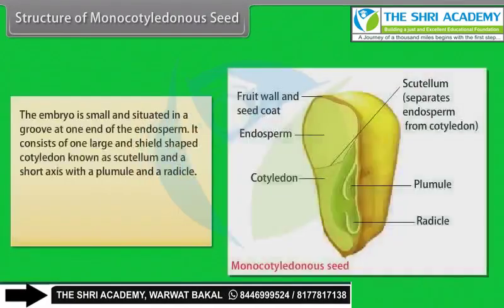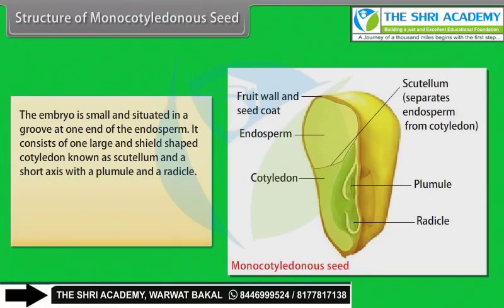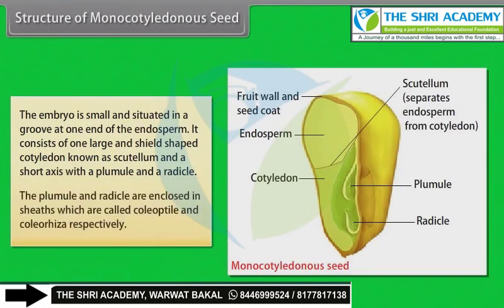The embryo is small and situated in a groove at one end of the endosperm. It consists of one large and shield-shaped cotyledon known as scutellum, and a short axis with a plumule and a radicle. The plumule and radicle are enclosed in sheaths which are called coleoptile and coleorhiza respectively.